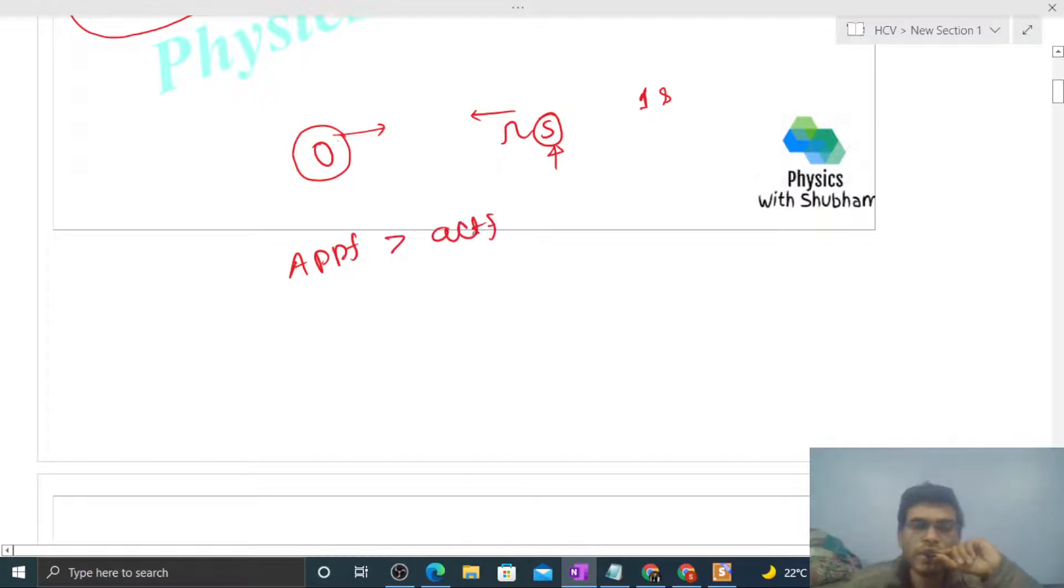So we can say the apparent frequency will be higher than the actual frequency because of the relative motion between the source and the observer. The number of waves produced in one second and the number of waves the observer receives in one second will be different. The waves received will be higher than the waves produced.